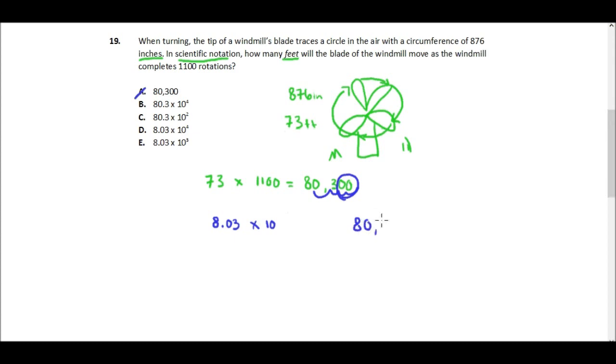We have to figure out, it's 10 to the what? As we move the decimal over, let's count: 1, 2, 3, and 4 spaces to move the decimal over to where it belongs for scientific notation. Since we moved it 4 places, we put a 4 there. So the answer is 8.03 times 10 to the fourth, so that is answer choice D.